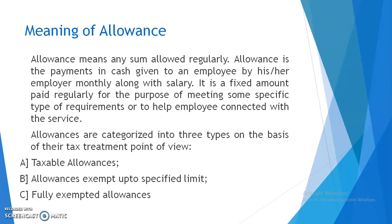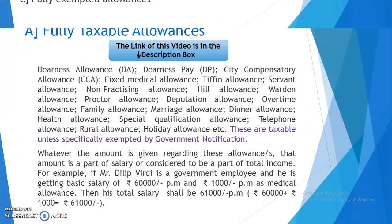Allowances are categorized into three types on the basis of their tax treatment point of view. Number one, taxable allowances. Number two, allowances exempt up to a specified limit. And number three, fully exempted allowances.